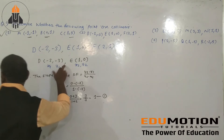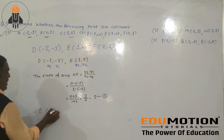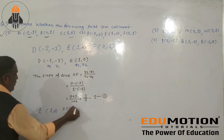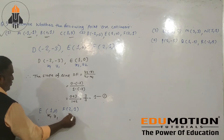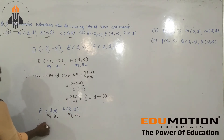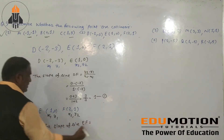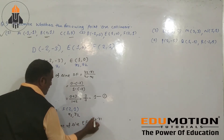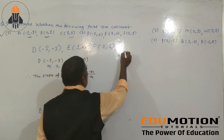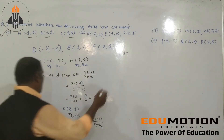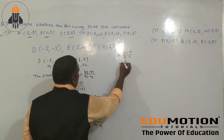Now we find the slope of line EF. E has coordinate 1 comma 0, and F has coordinate 2 comma 1. We label these as x1, y1, x2, y2. The slope of EF equals y2 minus y1 divided by x2 minus x1. The value of y2 is 1, minus y1 which is 0, divided by x2 which is 2, minus x1 which is 1. That gives 1 minus 0 divided by 2 minus 1, which equals 1 divided by 1, equal to 1.